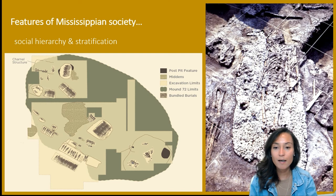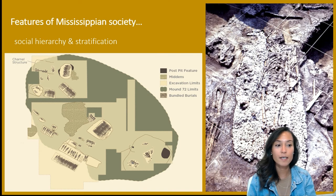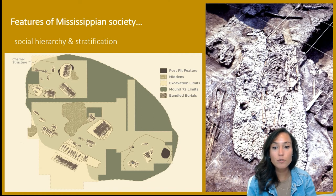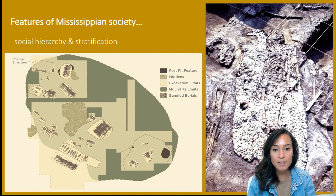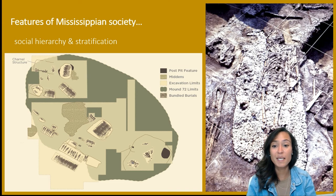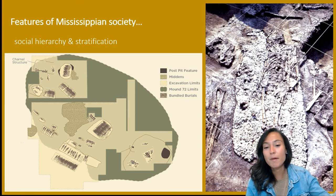One key piece of archaeological evidence for the emergence of social hierarchy and stratification is Mound 72, which contains two men laid out on a platform of 20,000 shell beads. Altogether, Mound 72 contains over 250 bodies, many of which provide evidence of human sacrifice. Analysis of the primary male bodies indicates they consumed large amounts of meat, suggesting they were likely elite members of society.